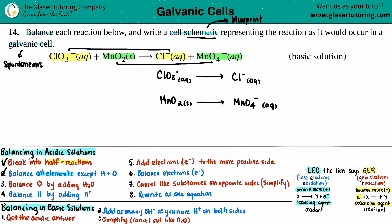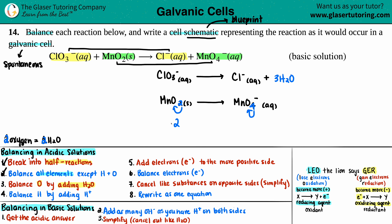Step three: balance the oxygen — always before hydrogen. We balance oxygen by adding H₂O. If you need one oxygen, add one H₂O; if you need two, add two H₂O. For the chlorine half-reaction: three oxygens on the left, none on the right, so add three H₂O on the right. For the manganese half-reaction: two oxygens on the left, four on the right, so add two H₂O on the left. Step three is done.